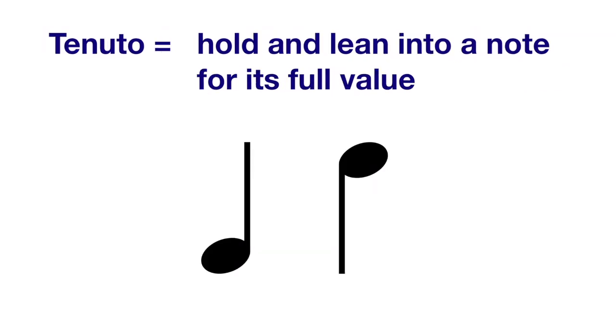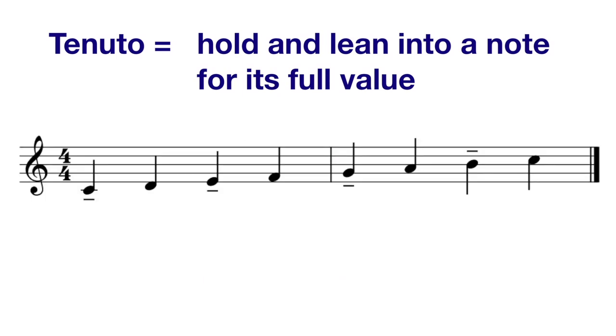A tenuto symbol means to hold and lean into a note for its full value. And it's indicated by this little line that can appear above or below a note. It literally means held, and it implies a little bit of stress that is less like volume and more just like leaning into the note. So if I were to play a tenuto every other note, it would sound something like this. It's got just a little bit more length to it. It's not any longer than its value should be, but we're just really milking that entire value, so to speak.